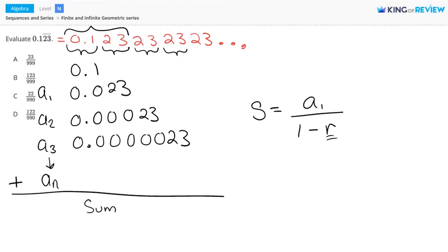So the next step is to find R, which is the common ratio. The common ratio can be determined by A2 divided by A1. This is 0.00023 divided by 0.023. And when you work this out, you get 0.01. So the common ratio of this portion of our series is 0.01.